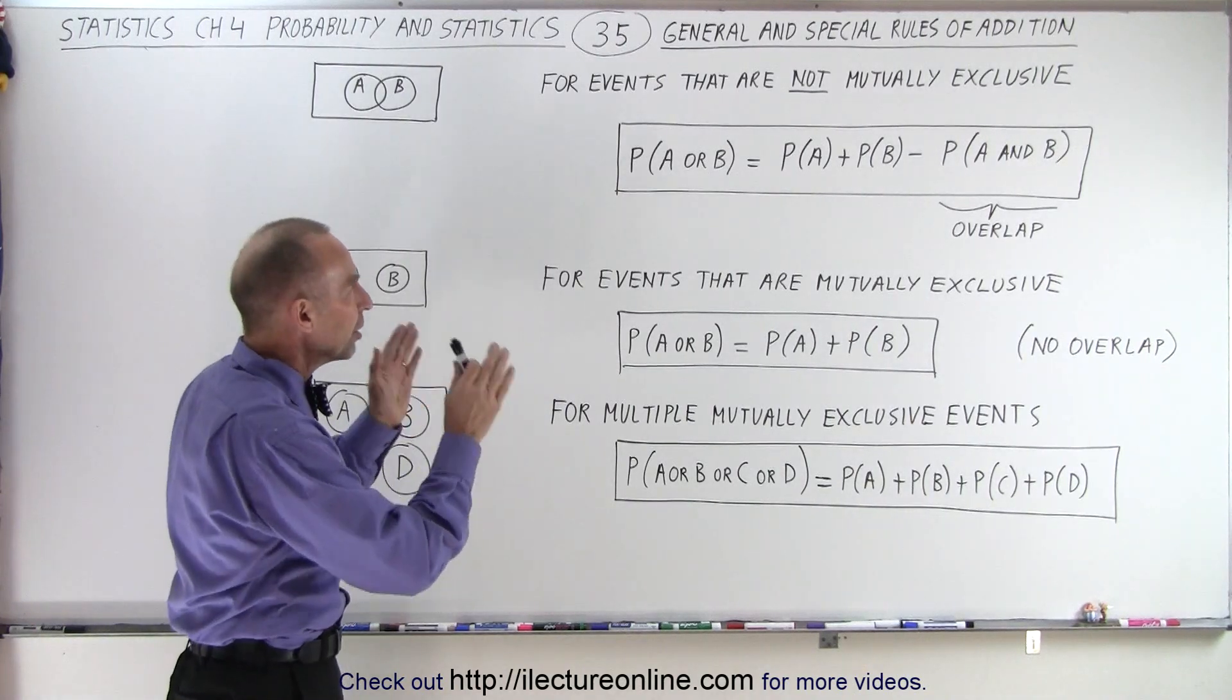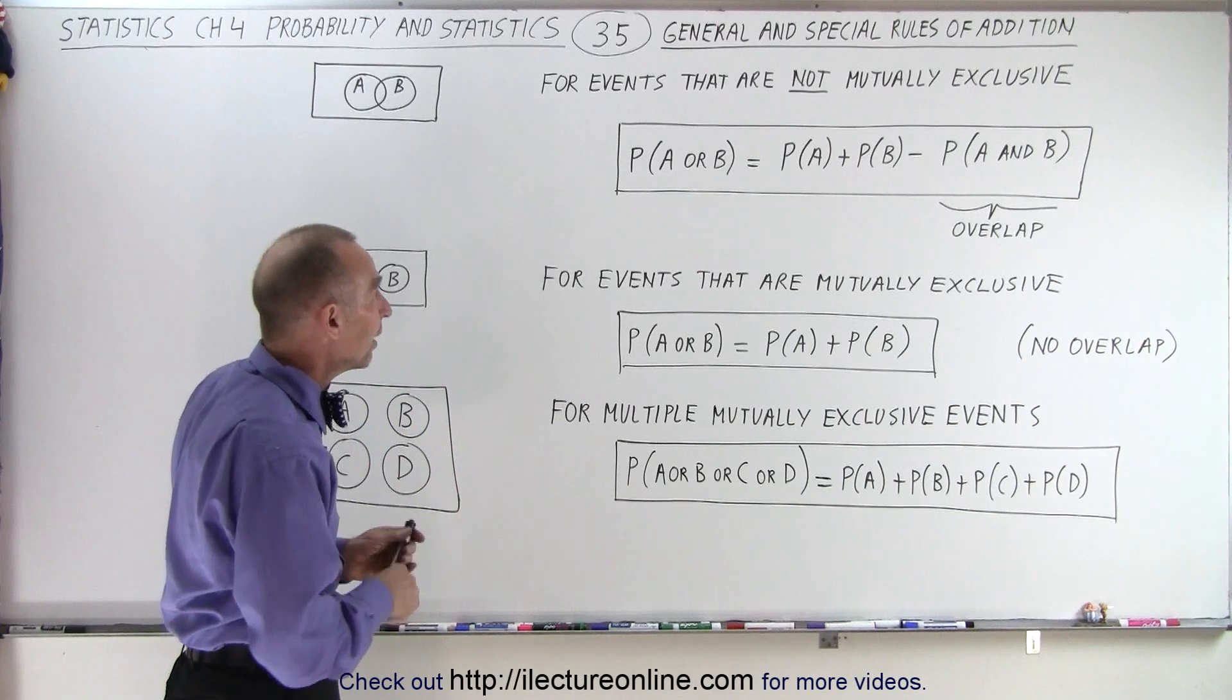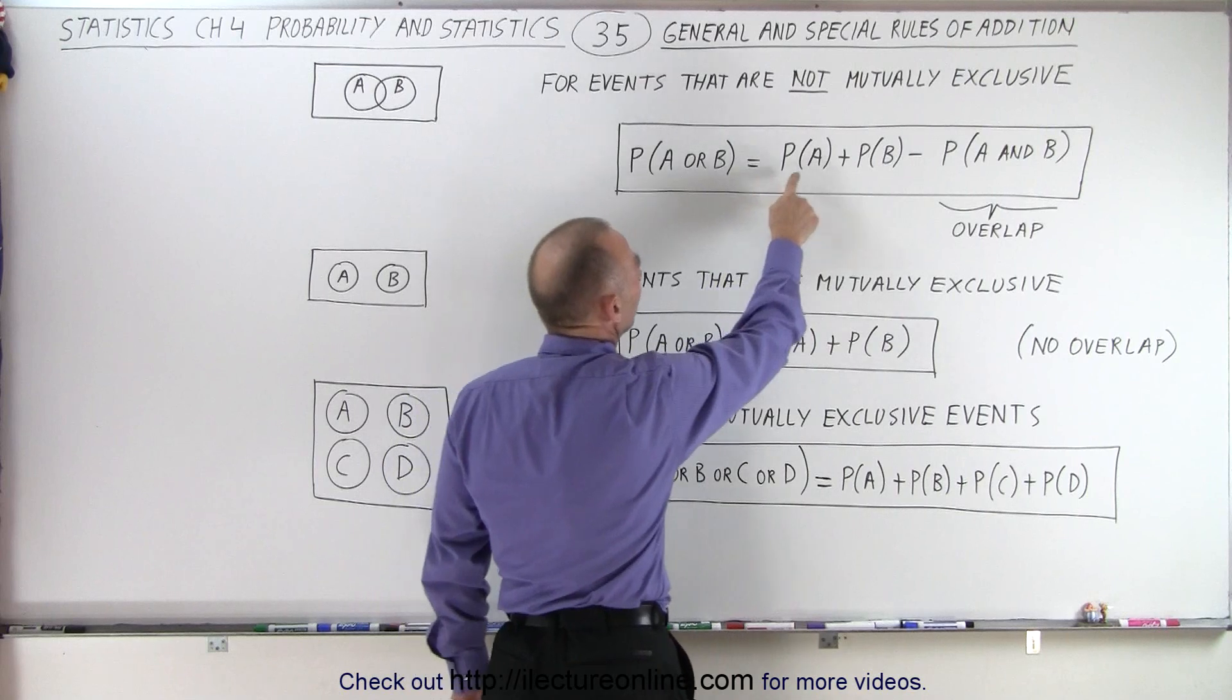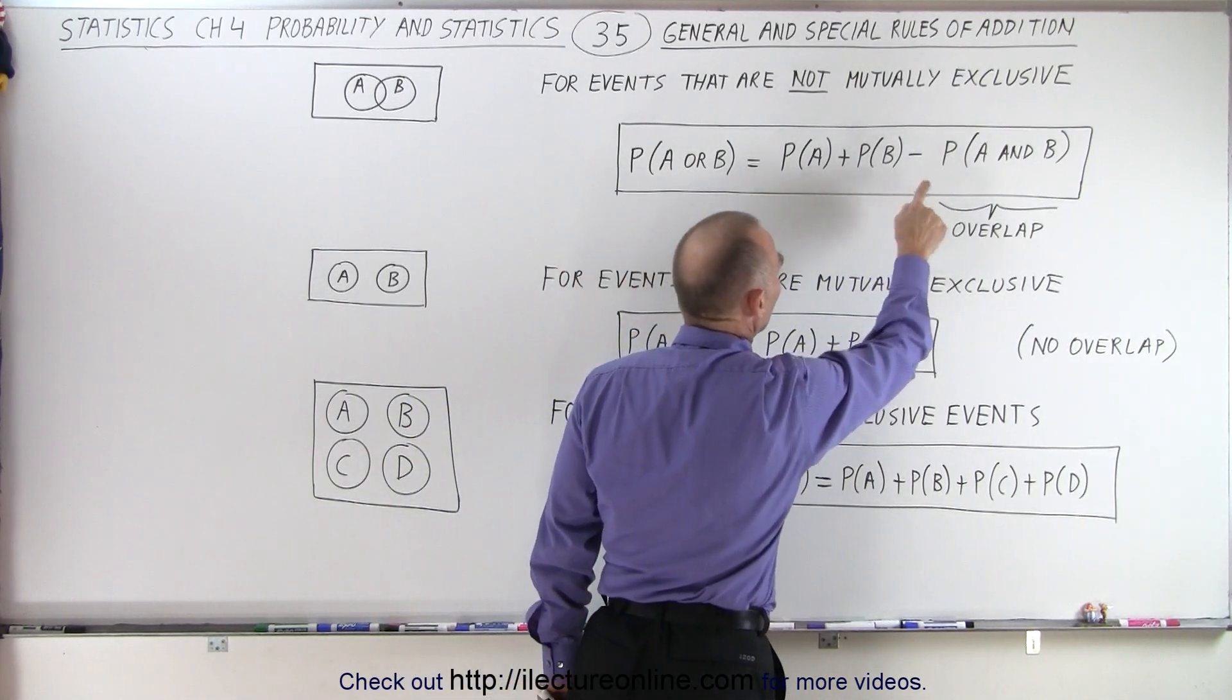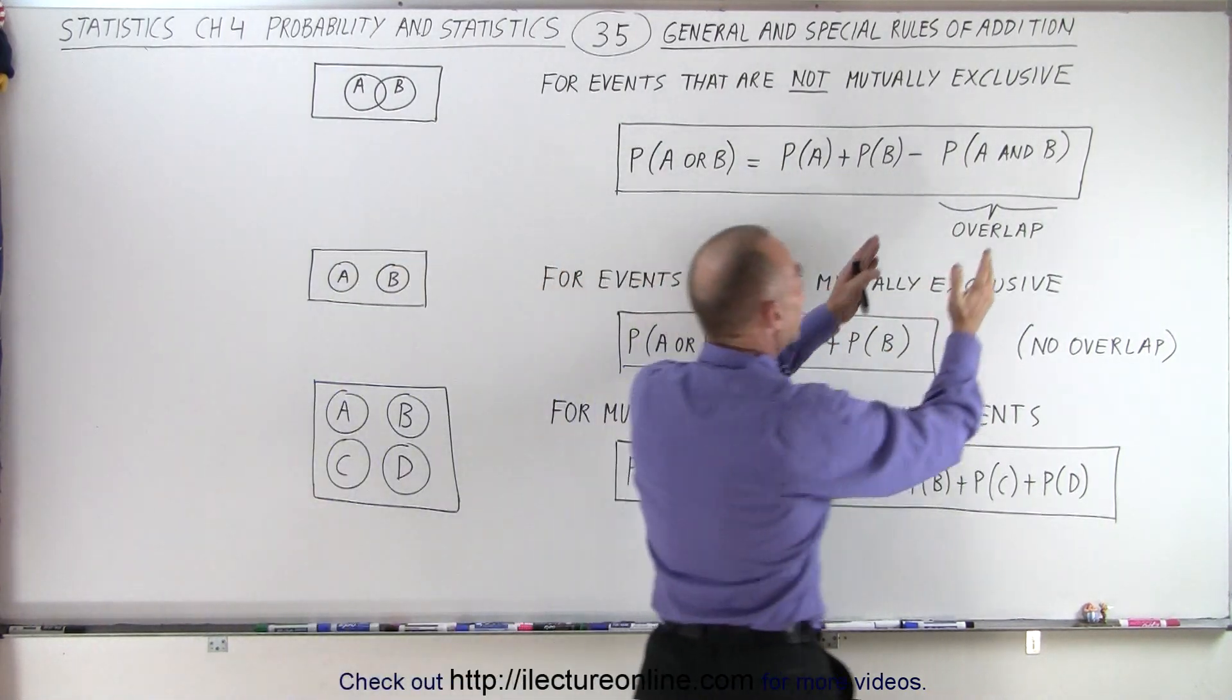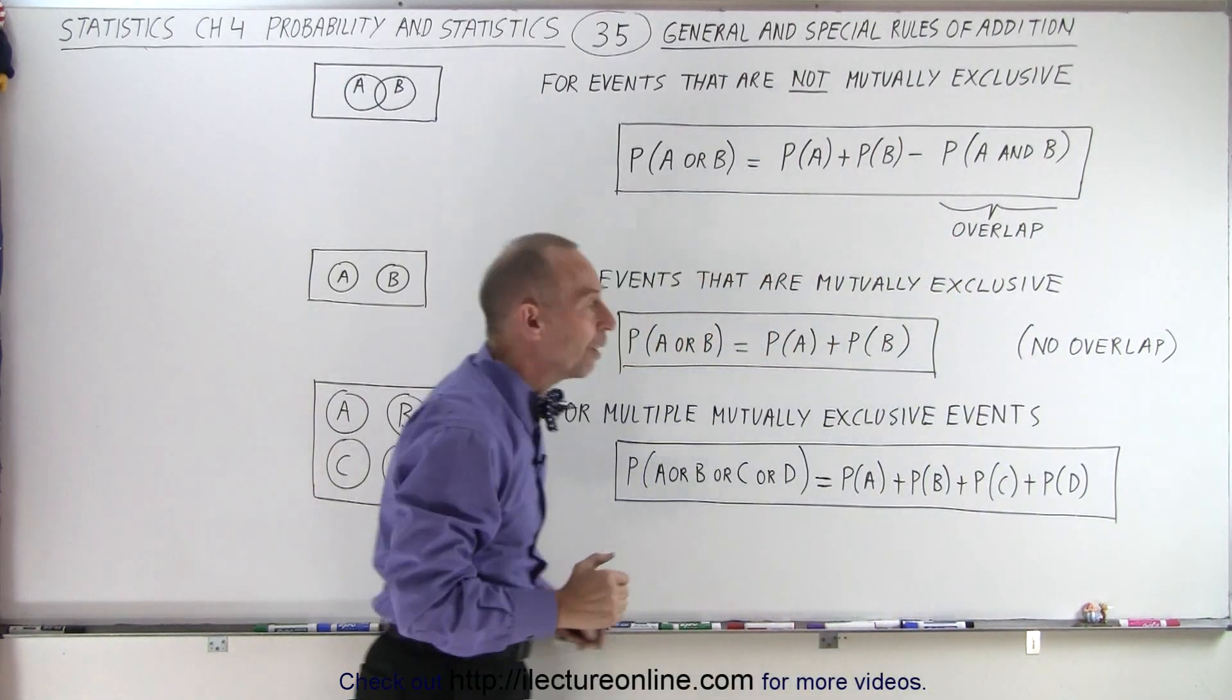When events are not mutually exclusive, that means there's some overlap between the two events. Then when we look for the probability of A or B, that is equal to the probability of A plus the probability of B minus the probability of A and B. The probability of A and B really represents the overlap between the two events.